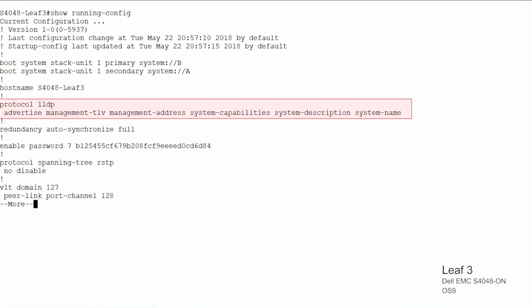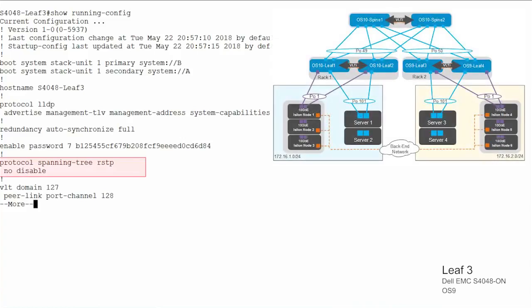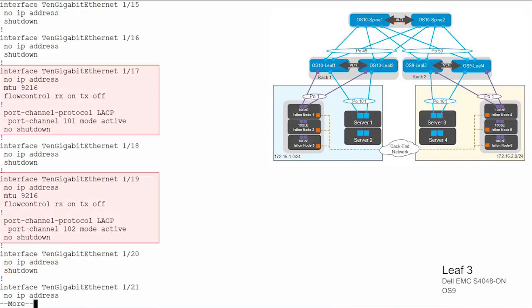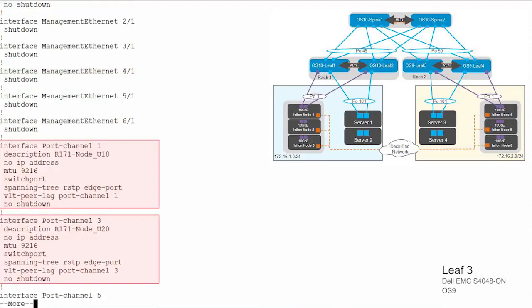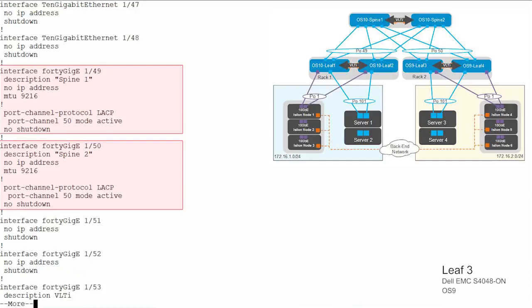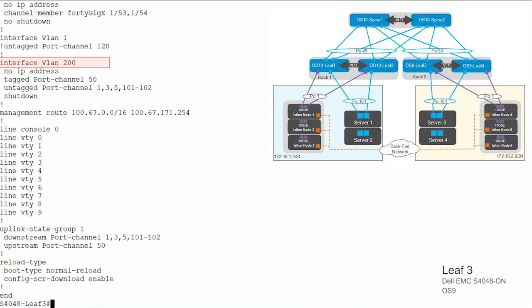Enable LLDP and configure the parameters. Enable RSTP to prevent loops. Configure VLT domain 127. Configure ports 1, 3, 5, 17, and 19. Configure port channels 1, 3, 5, 101, and 102. Configure ports 49 and 50 and add them into port channel 50 using LACP. Create VLAN 200 and add untagged port channels 1, 3, 5, 101, and 102, and tag port channel 50. Configure UFD with downstream port channels 1, 3, 5, 101, and 102, and upstream port channel 50.